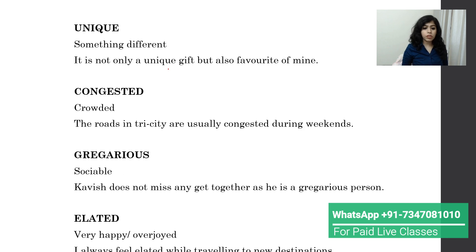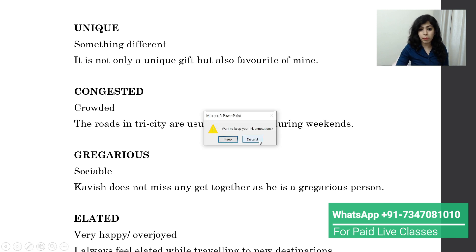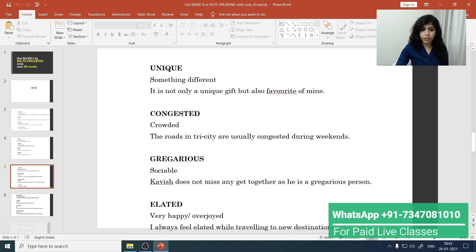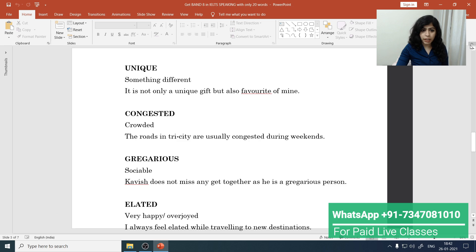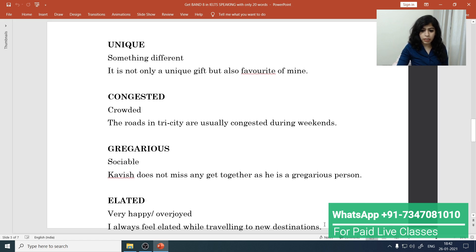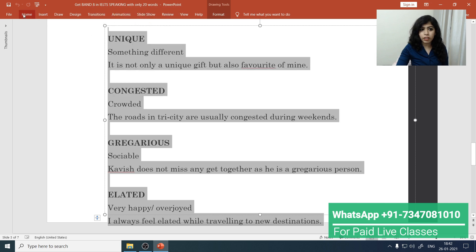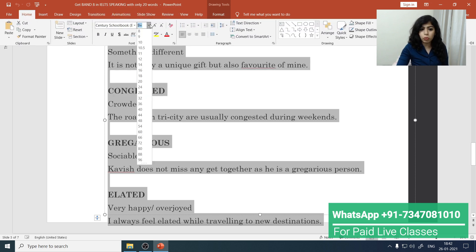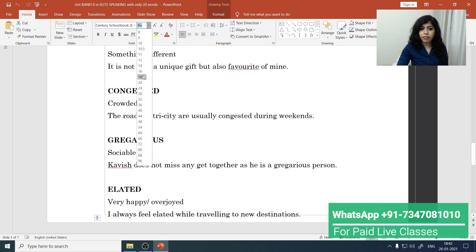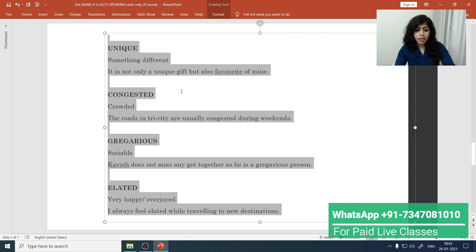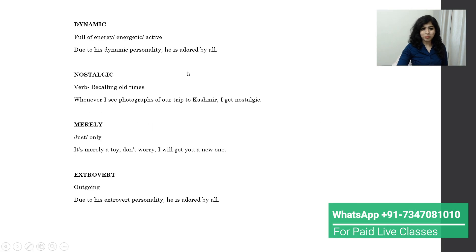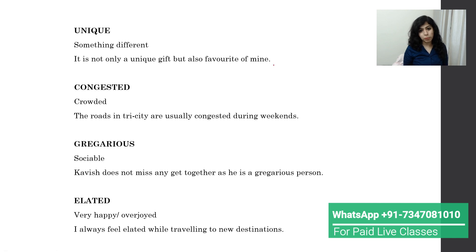The next word is 'unique,' which means something different. For example: 'It is not only a unique gift but also a favorite of mine.' So you can describe something as unique — meaning different or one of a kind — in this kind of sentence structure.